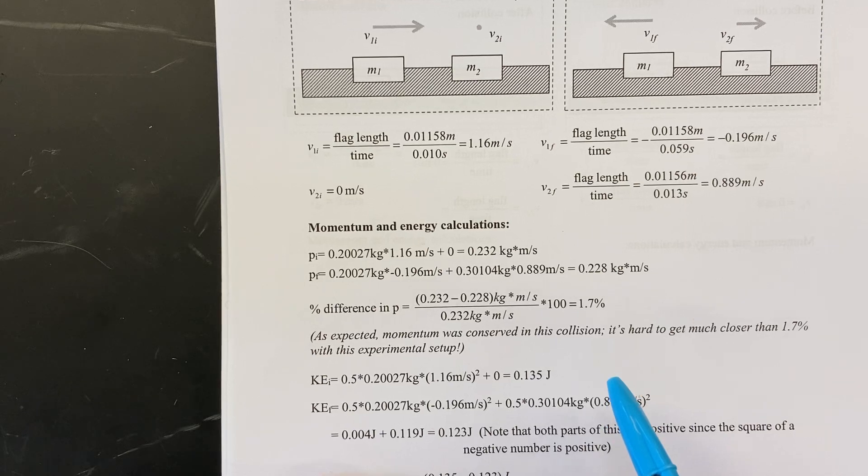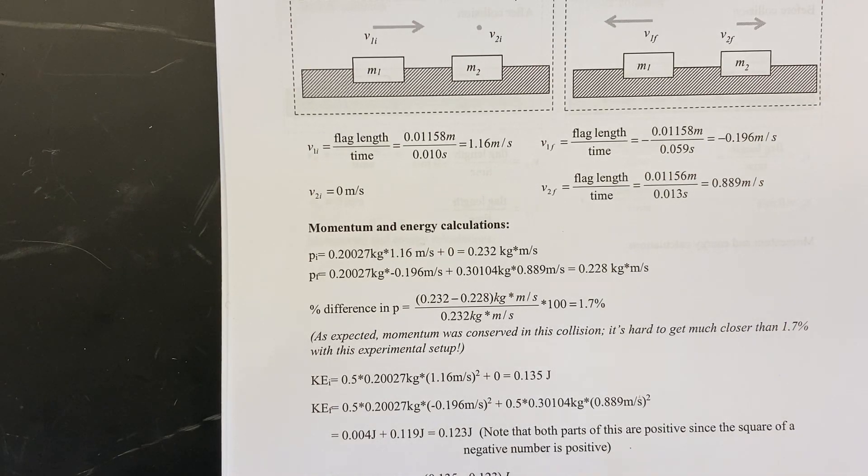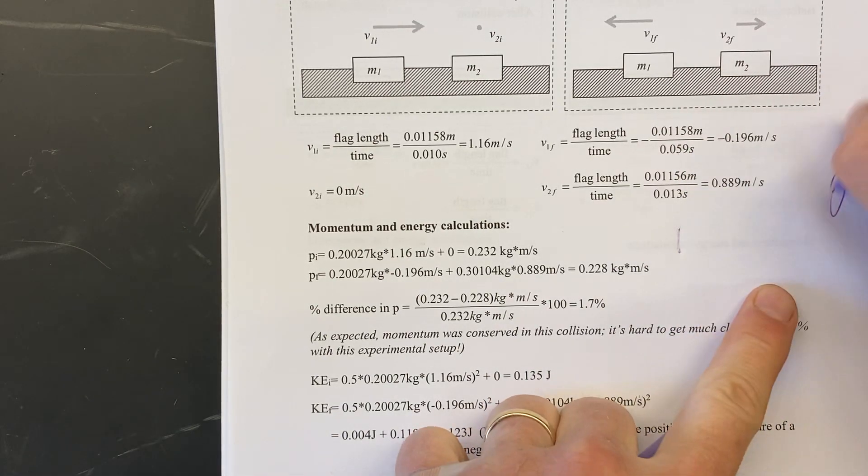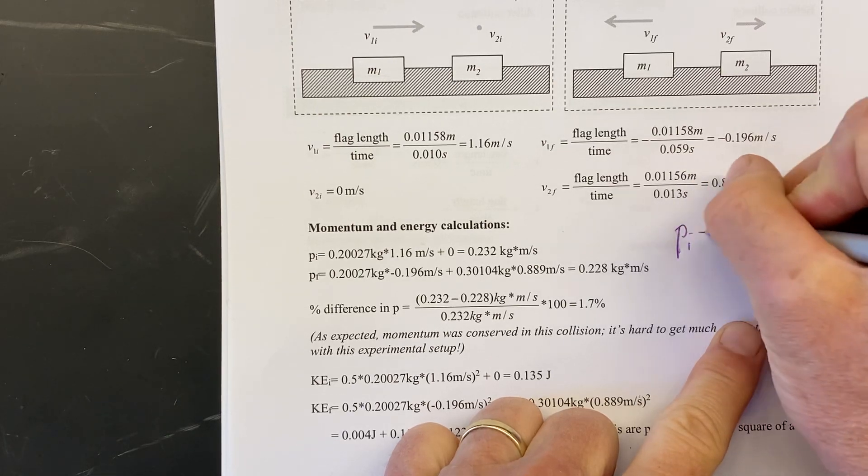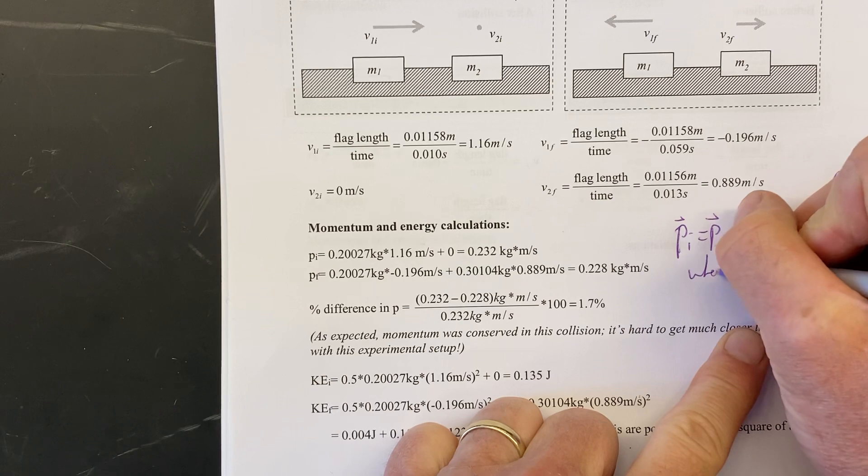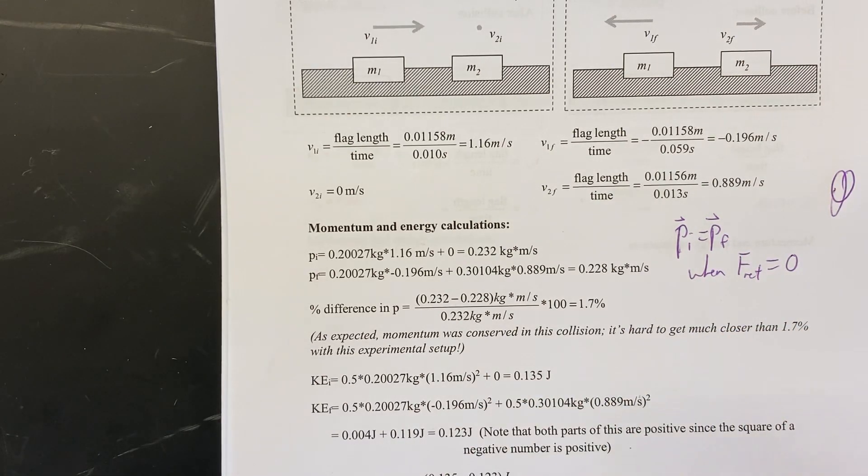Now what do we expect? We expect that the momentum is going to be the same before and after the collision. Okay, we expect that PI equals PF. The PI equals PF when F net is 0, when the system is isolated.